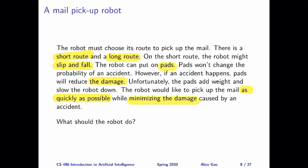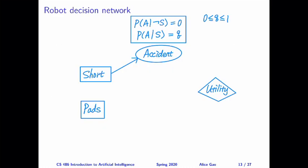Hello everyone, this is Alice Gao. In this video, I will continue working on constructing a decision network for the mail pickup robot. In the previous video, we got to the stage where we have four nodes in the decision network, and then we made the connection from the decision variables to the random variable accident.